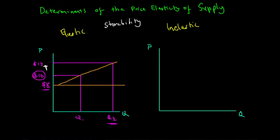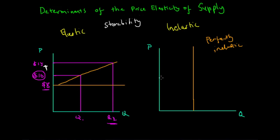When products cannot be stored, they have an inelastic supply curve. This relates to perishable goods such as bread, which typically has a very inelastic — even perfectly inelastic — supply curve represented as a vertical line. Bakeries can only sell freshly made bread on the day. Say the prevailing market price is five dollars and the bakery makes 100 kilos of bread before opening.